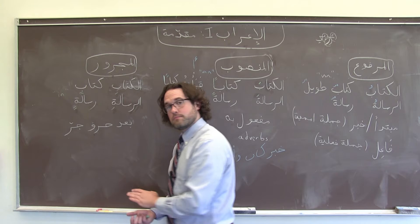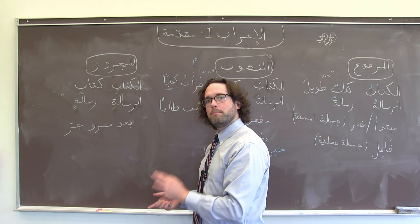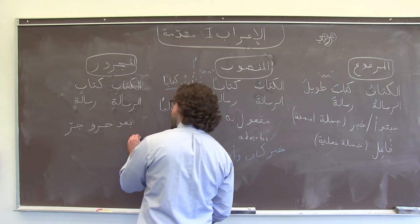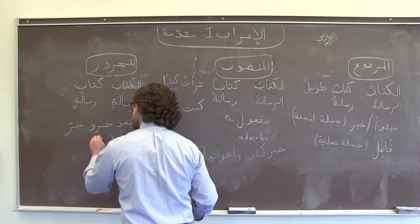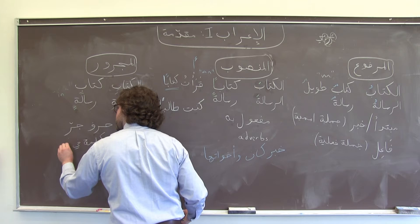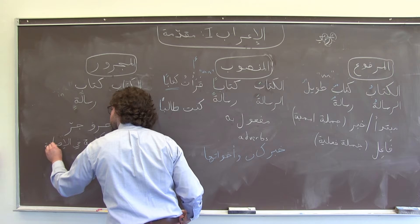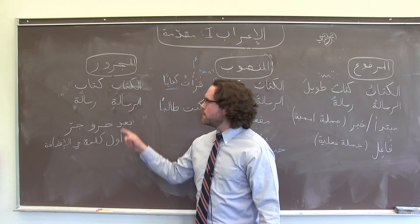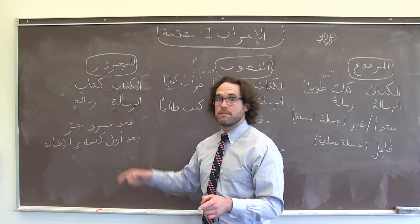After a preposition is one circumstance, and the other is every word in an إضافة — but only after the first word, which takes whatever إعراب it would normally take. After the first word of an إضافة, all of the other nouns in that إضافة are going to take مجرور endings, and we're going to see that more in the dedicated video on مجرور.